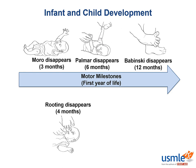Lastly, the Babinski reflex disappears around 12 months. And yes, this is the same sort of Babinski sign that one sees in patients with upper motor neuron lesions. Do you remember which way the toes go in patients with upper motor neuron lesions? An upward motion of the toes is a positive Babinski reflex.